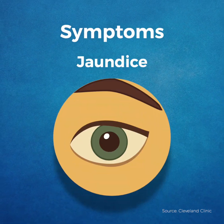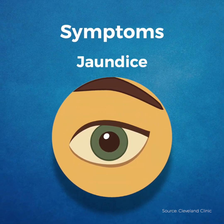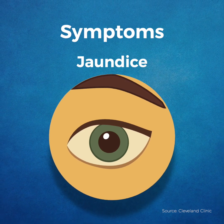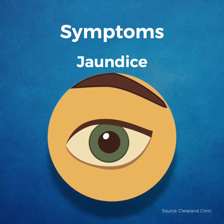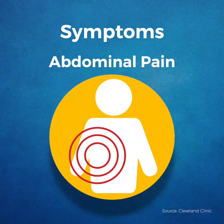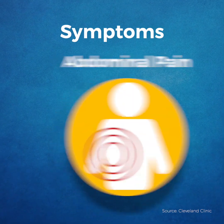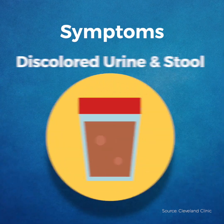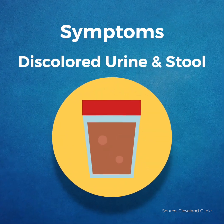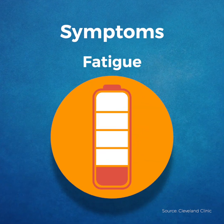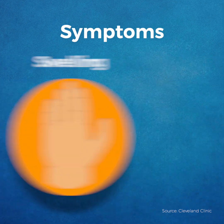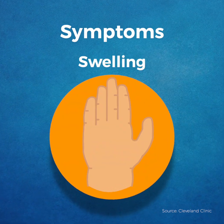The most common symptom of liver disease is jaundice, a yellowing of your skin and the whites of your eyes. Other signs may include abdominal pain, easily bruising, changes in the color of your urine or stool, fatigue, nausea or vomiting, and swelling in your arms or legs.